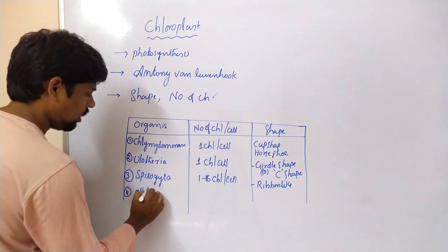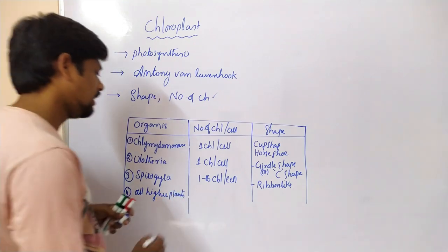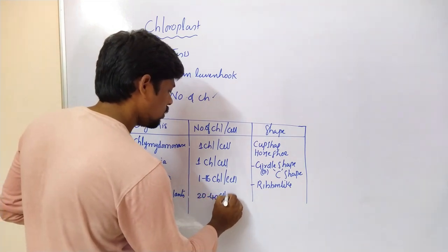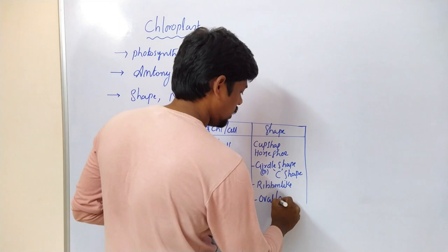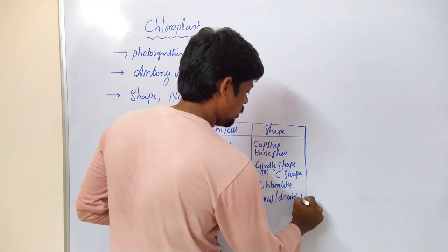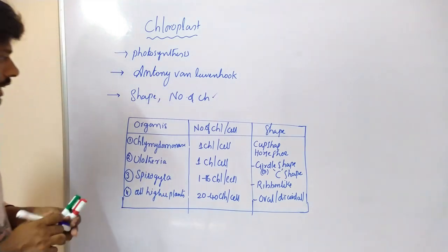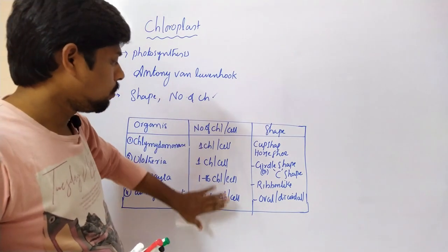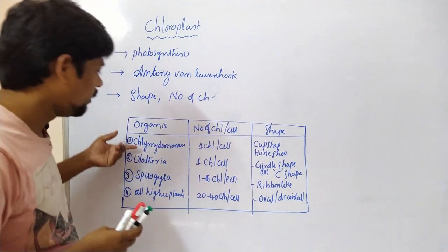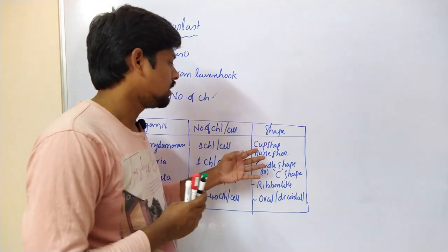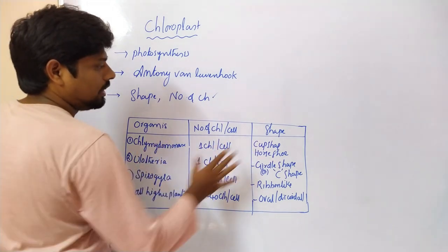All higher plants contain 20 to 40 chloroplasts per cell, with an oval or discoid shape. This table is very important. It shows the number of chloroplasts per cell - a cell that contains different numbers of chloroplasts in different organisms, and the shape also varies from one organism to another. Let us now look at how these shapes are present.